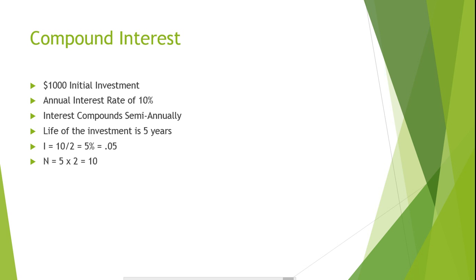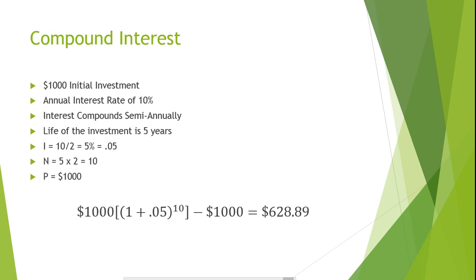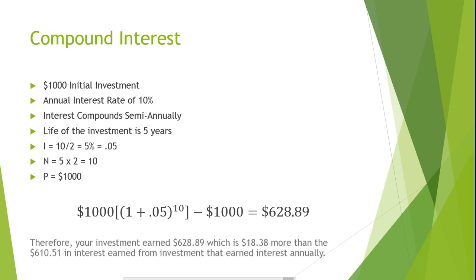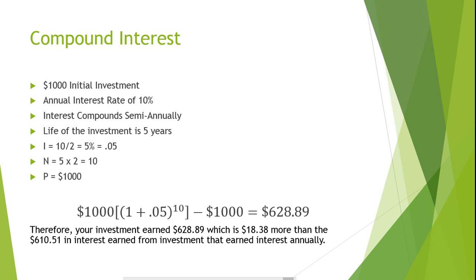Our principal remains the same at $1,000. Now that we have the interest rate per compounding period (5% or 0.05) and the number of compounding periods (10), we can plug our figures into the compound interest formula. Remember, if the interest rate is expressed as a percentage, divide by 100 to get a decimal. Plugging these values in, we find that we would earn $628.89 in interest, which is $18.38 more than the $610.51 earned from the investment that compounded interest annually.